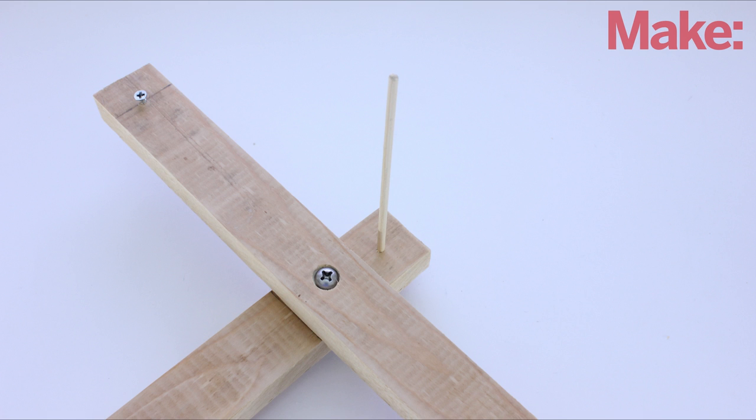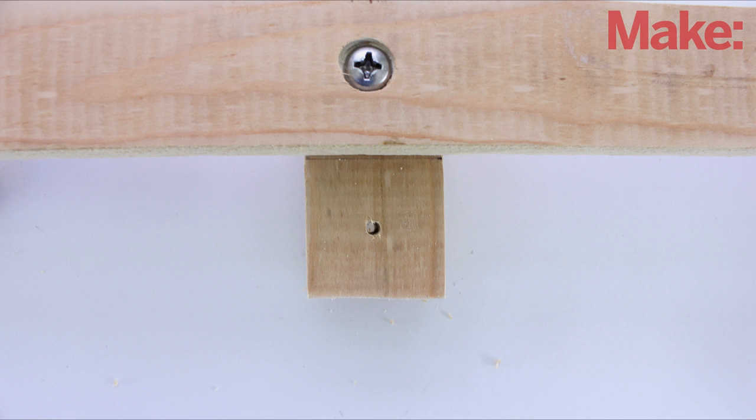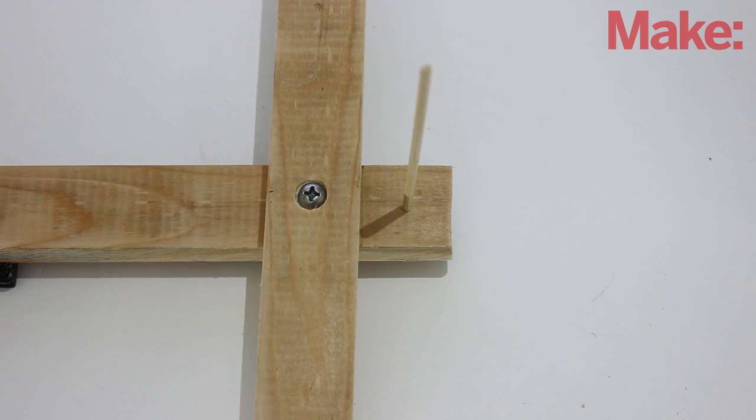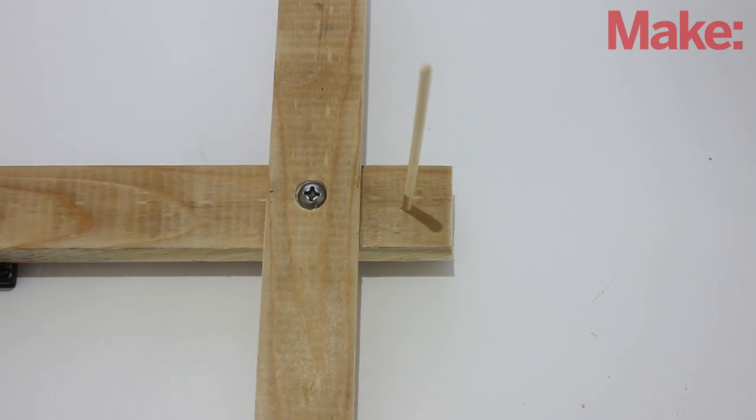The last thing to add is the positioning guide. On the side of the cross bar that sticks out past the side board, drill a small hole. Then, insert a small wooden dowel into the hole. This will act like a sundial and help us to line up the panel directly with the sun.